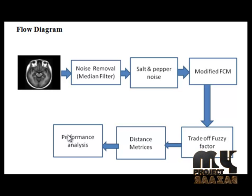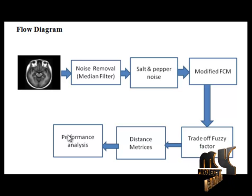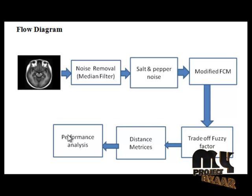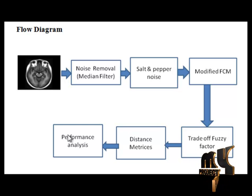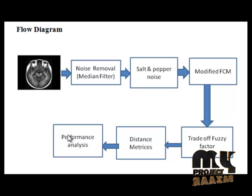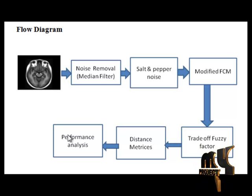The next block is performance analysis. Peak signal-to-noise ratio (PSNR) and mean square error (MSE) values are computed in this block. PSNR is an approximation to human perception of reconstruction quality. Although a high PSNR generally indicates higher quality reconstruction, in some cases it may not. PSNR is most easily defined via the mean square error.